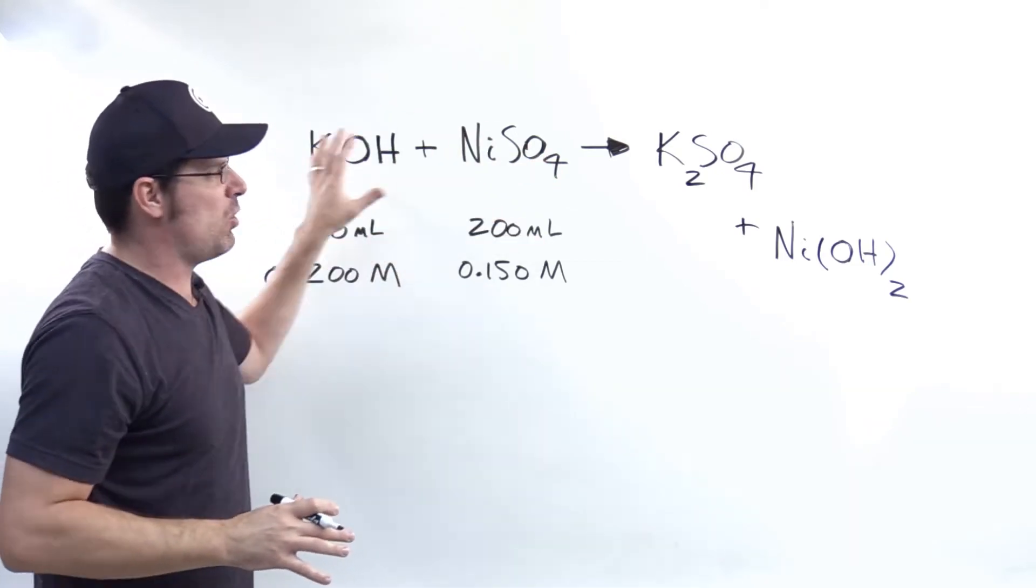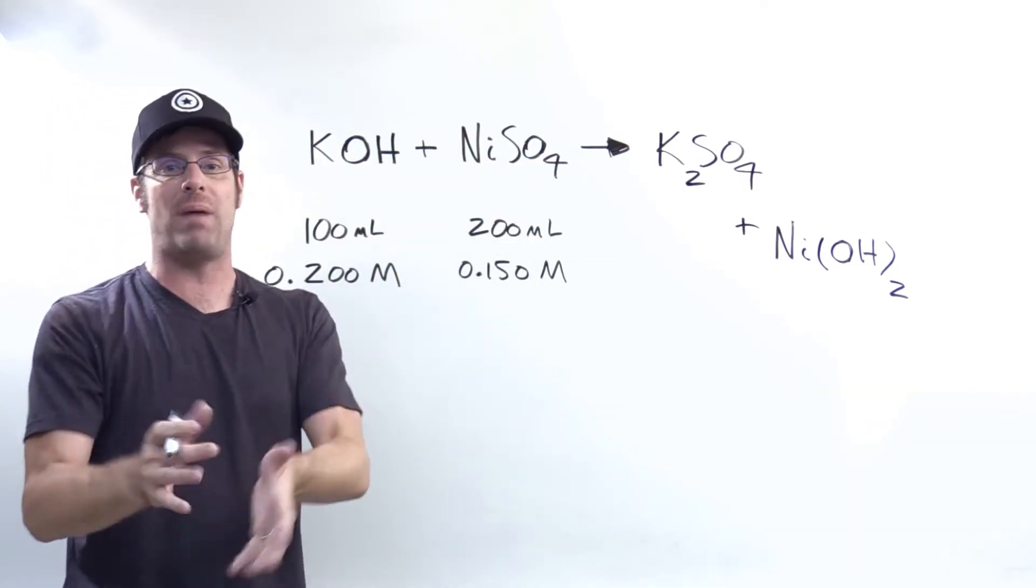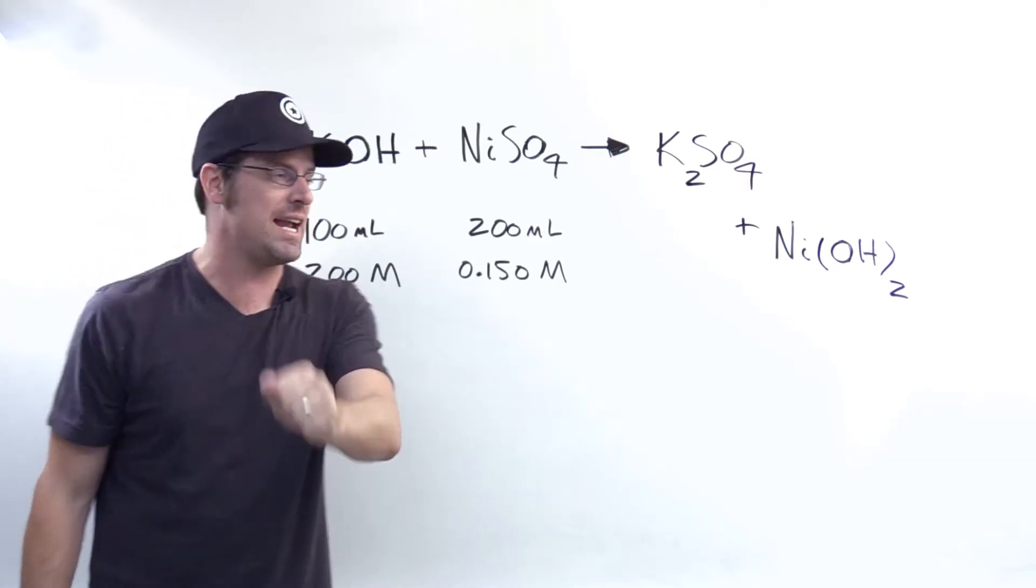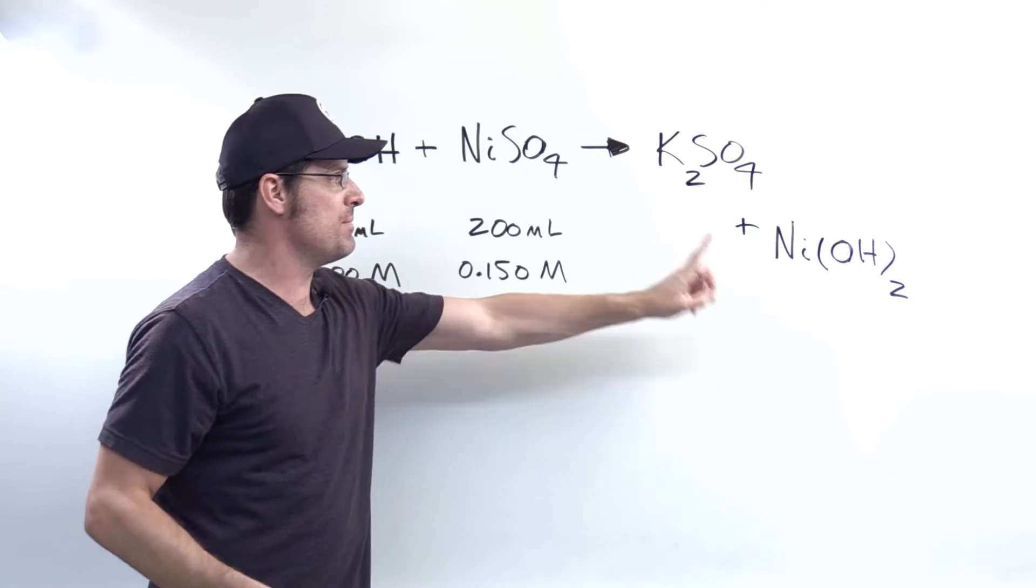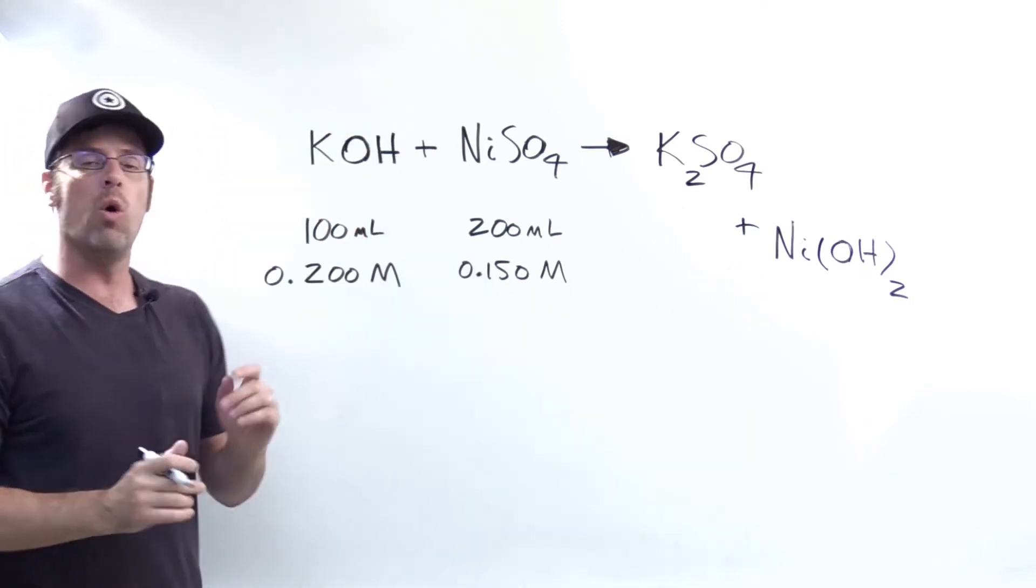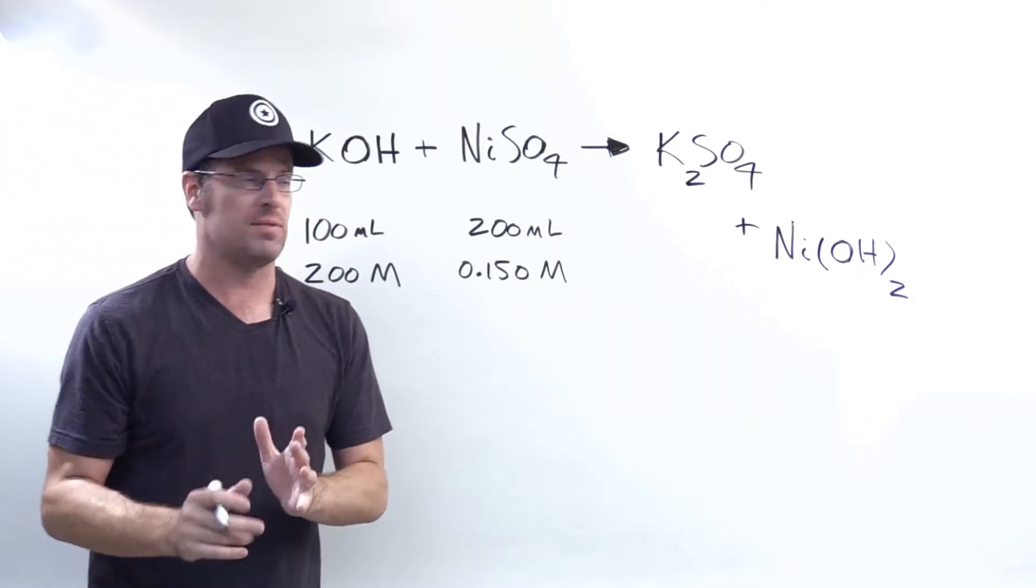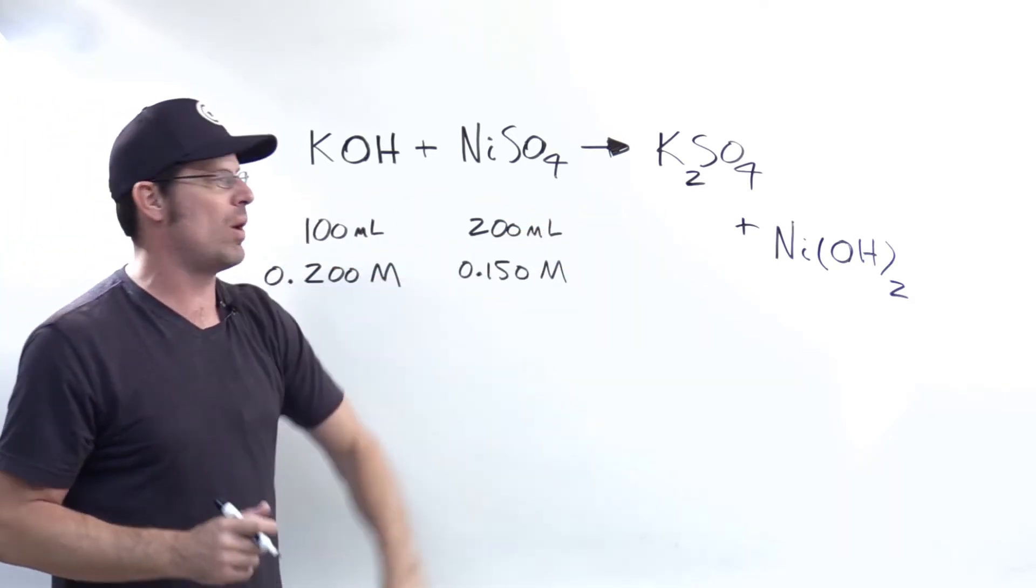In order to get my final equation here correct, I also need to balance the equation. Once we get to the stage where we have all of our formulas correct here, I cannot change any of the subscript numbers. Those are fixed. I'm only allowed to add coefficients. For example, here on the left, I've got one potassium, but on the right, I have two. So what do I do?